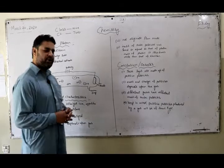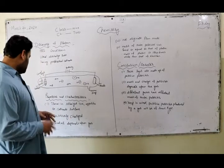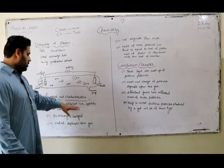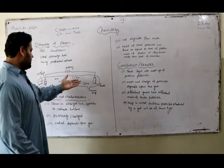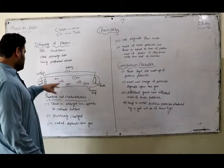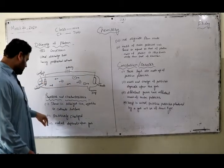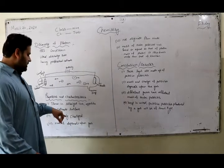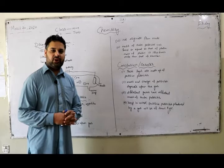Like cathode rays, there are also some properties of these rays. Number one: these rays travel in straight line in opposite direction to the cathode surface. As we see here, these rays travel in straight line but in opposite direction of the cathode rays.